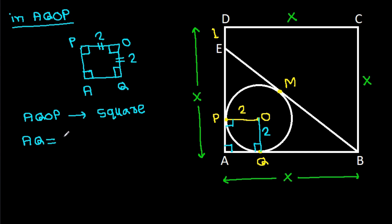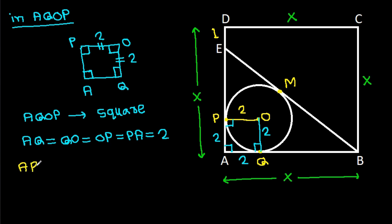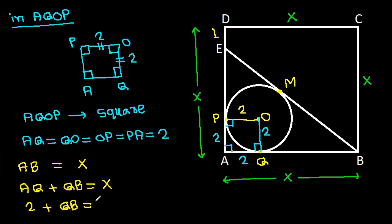So AQ equals QO equals OP equals PA equals 2. PA is 2 and AQ is 2. We have AB is X, and AB equals AQ plus QB, so X equals 2 plus QB. Therefore QB equals X minus 2.